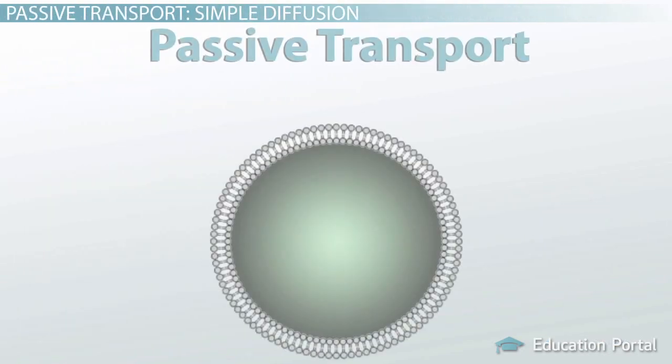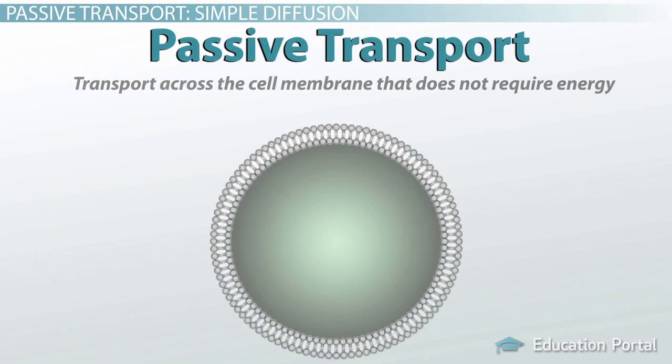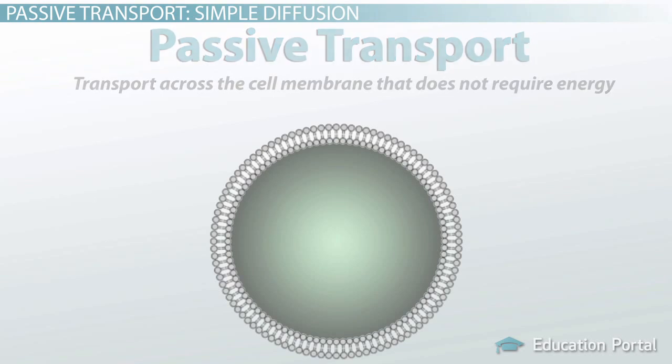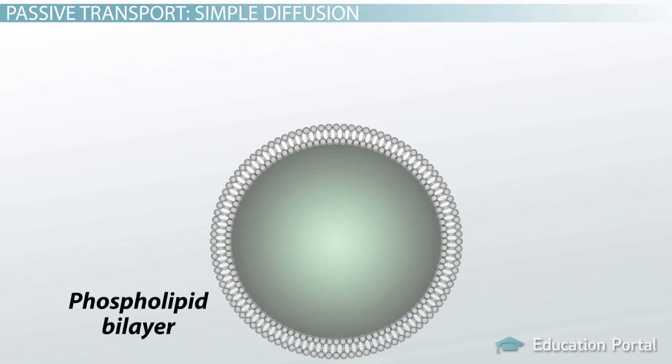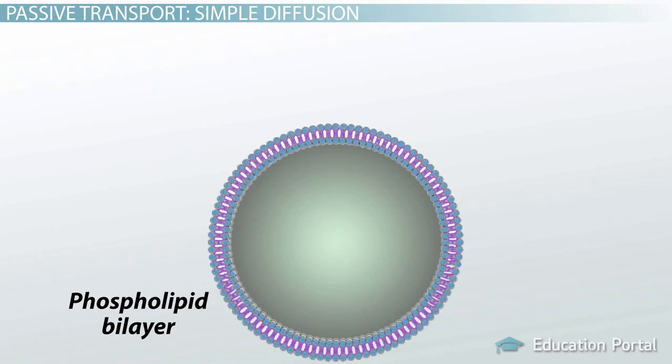Diffusion across the cell membrane is a type of passive transport, or transport across the cell membrane that does not require energy. Remember that the cell membrane is a phospholipid bilayer. Although the inside and the outside of a cell are both water-based, there is a hydrophobic region in the middle, and this is an important barrier to anything large, charged, or hydrophilic.